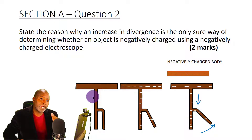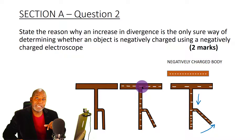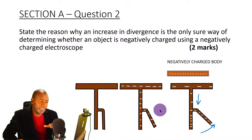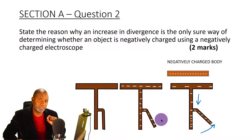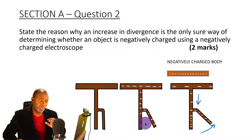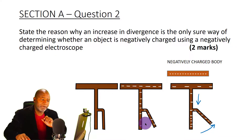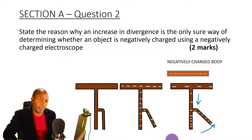A negatively charged electroscope has excess electrons, which is why we show those excess electrons on the body - they are uniformly distributed throughout. When they reach the rod and the leaf, the leaf is forced to diverge because there is repulsion between like charges. This electroscope has already been charged and carries a negative charge.